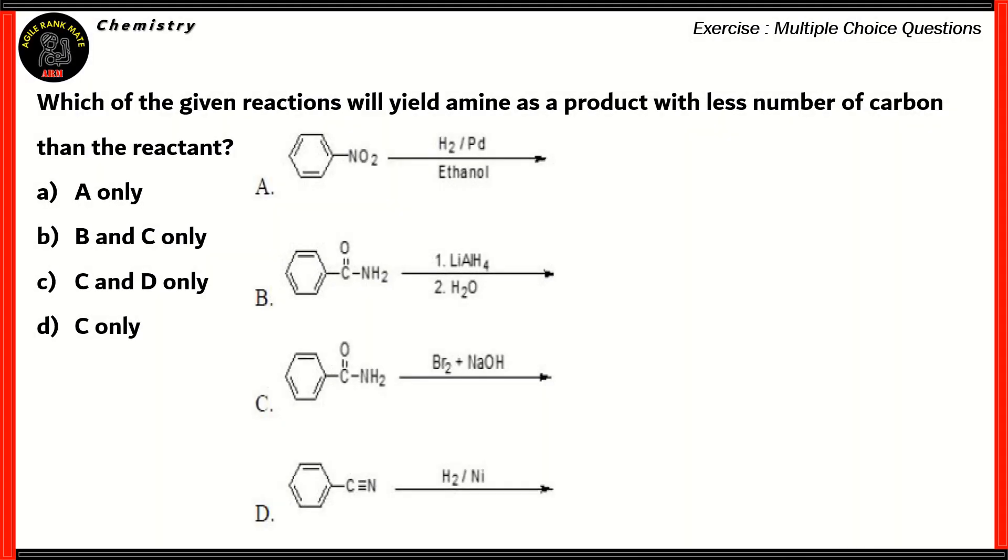Now, let's look at some questions of chemistry. Which of the given reactions will yield an amine as a product with less number of carbon than the reactant? Now, amine is basically a carbon chain with a functional group of NH2. So, for this to work, we need to look at the four reactions. Now, we need to find out which of the given reactions will yield amine as a product with a less number of carbon than the reactant itself.